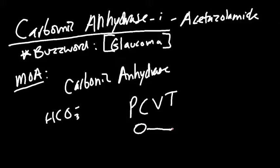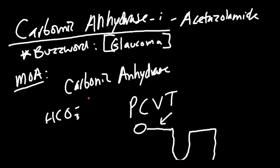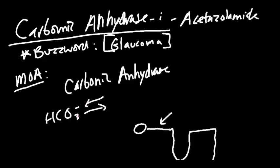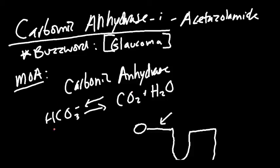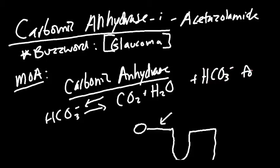In the nephron — glomerulus, PCT, descending, ascending, distal convoluted tubule, then collecting ducts — we're dealing with the proximal convoluted tubule. The reaction carbonic anhydrase deals with is converting bicarbonate into carbon dioxide and water, and it's reversible. This enzyme simply takes CO2 and water and converts it to bicarbonate, or vice versa. It's used for both bicarbonate reabsorption and bicarbonate formation.